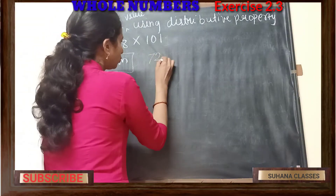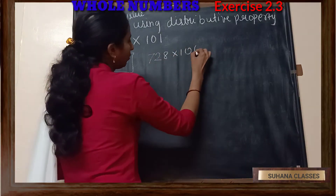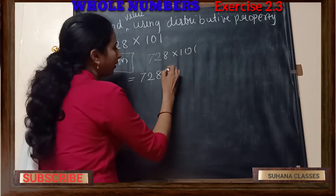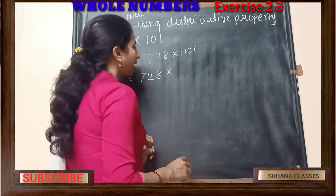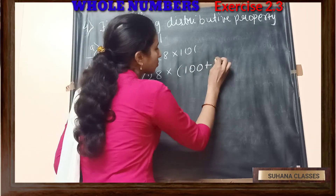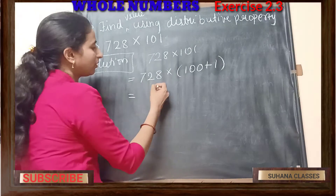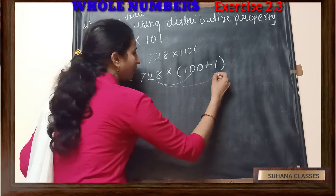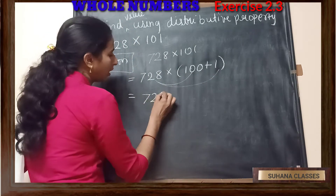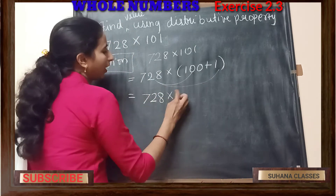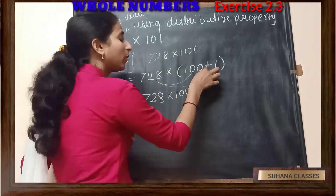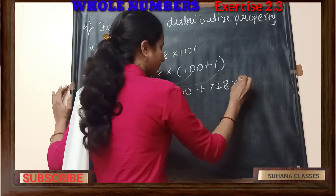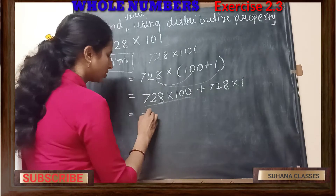Here we have 728 into 101. I can write this as 728 into 101, and 101 I can write as 100 plus 1. So what does our distributive property state? I can give 728 for 100, and I can give 728 for 1 also. So let's give 728 into 100, and in between, whatever sign is in the bracket, we give that sign, and then 728 into 1.